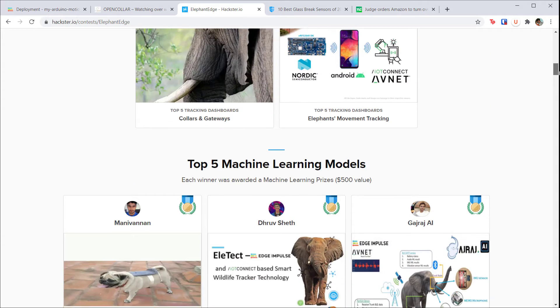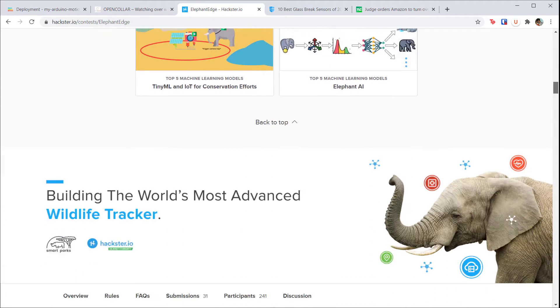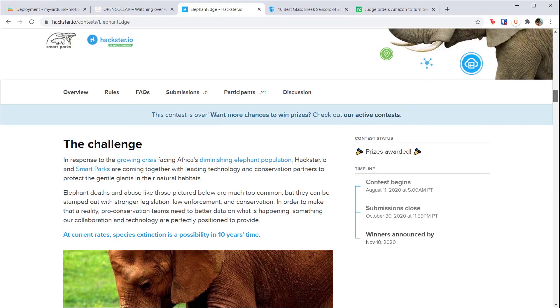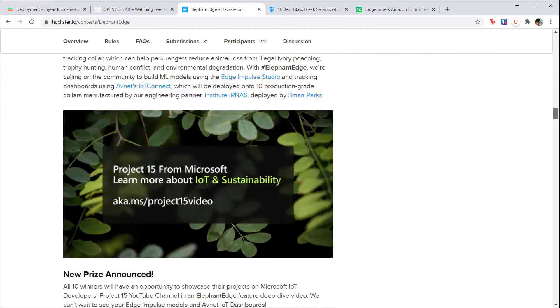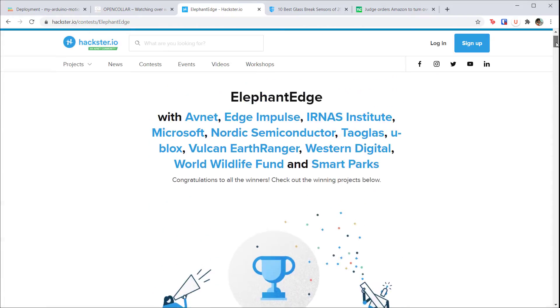As Africa's elephant population is declining, researchers are looking for improved ways to track them, and including machine learning on embedded collars is one way to do that. This can help create stronger legislation and law enforcement to prevent poaching and abuse.